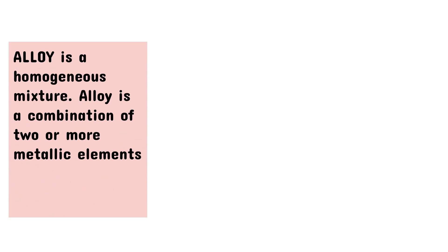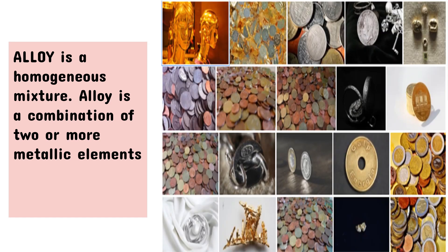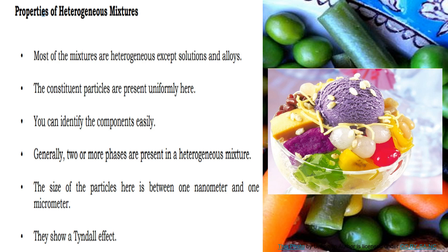Another example of homogeneous mixture is alloy — a combination of two or more metallic elements. Most mixtures are heterogeneous except solutions and alloys. An example of a heterogeneous mixture is Halo-Halo. In Halo-Halo, you can identify the components or ingredients easily, and you can see two or more phases that are present in the mixture.